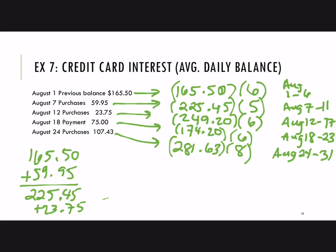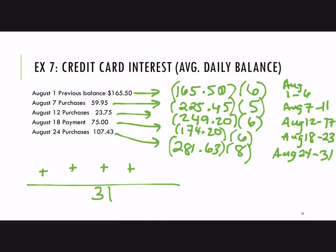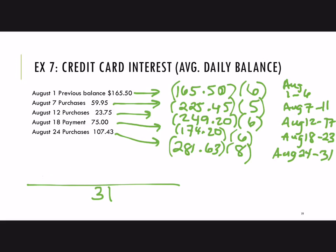Keep in mind why we're doing all this multiplication. We want to find the average daily balance for the 31 days in August, so we add up all those balances and divide by 31. Rather than adding each day individually, if the same balance holds for multiple days, we multiply by the number of days. When you do all these multiplications and add them together, that gives a total sum for August of $6,913.69. Divide by 31 and round to the nearest cent — that's about $223.02.